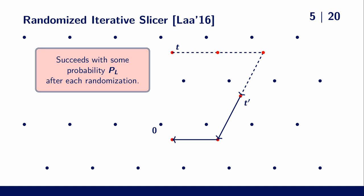Heuristically, one could say that there is some success probability p, depending on the list, that the target is properly reduced after each randomization.